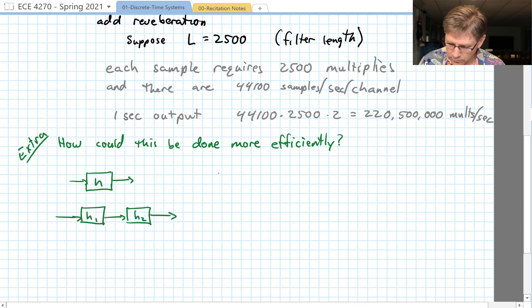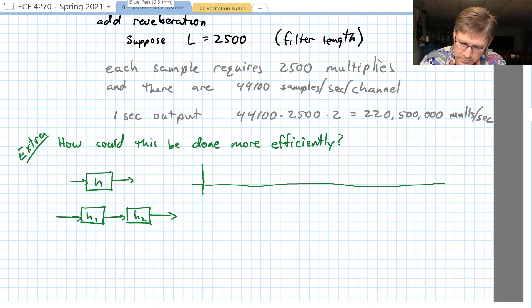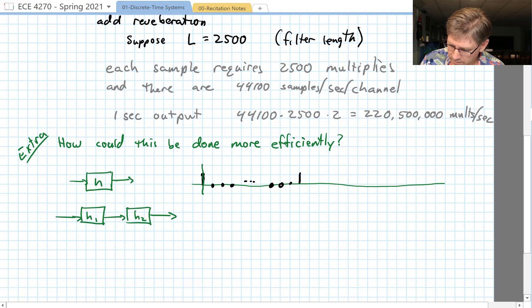So what do each of these look like? Well H1 would look something like this. At time zero it would have an output and then a whole bunch of nothing, and then maybe another output, maybe that one goes negative. More nothings for a very long time and maybe a little small something positive. So this takes three multiplies to implement H1.